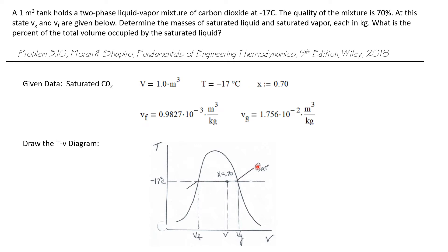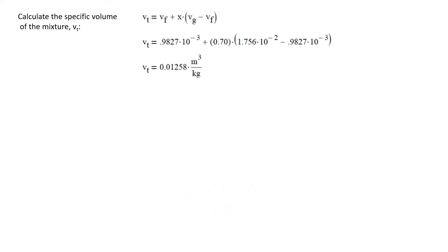The saturation pressure wasn't given, but we know we're under the vapor dome at a quality of 70%, so that puts us right about here on the diagram. Now let's calculate the specific volume of the total mixture. The specific volume of the mixture — the combined saturated liquid and saturated vapor — is V sub F plus the quality times (V sub G minus V sub F). Plugging in the given values, we calculate that the specific volume of the mixture is 0.01258 cubic meters per kilogram.